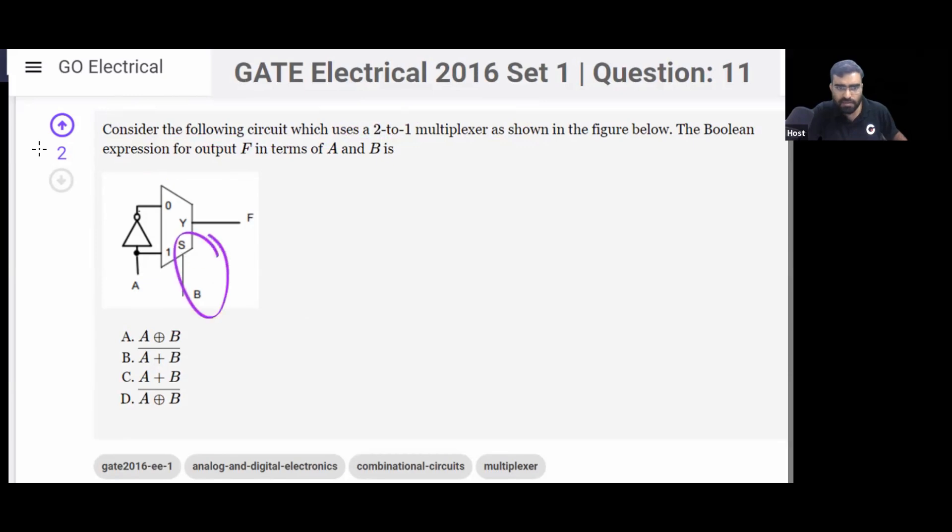You can see on the select line, variable B is applied. You can see this boolean variable B that is connected to select line. The boolean expression for the output in terms of A and B, what that will be? What will F be?